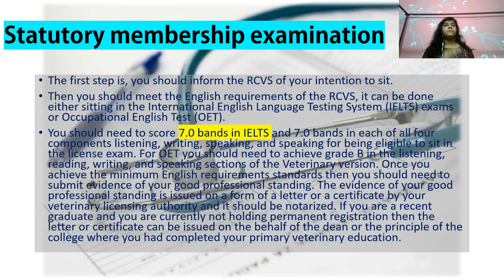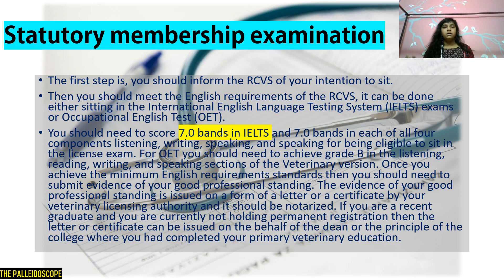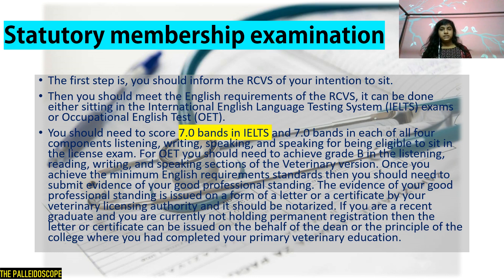Statutory membership examination — first step: inform RCVS of your intention to sit. Then meet the English requirements: you need seven bands in each of the four components of IELTS, or grade B in listening, reading, writing, and speaking of the veterinary version of OET. Once you achieve the minimum English requirements, you must submit evidence of good professional standing.